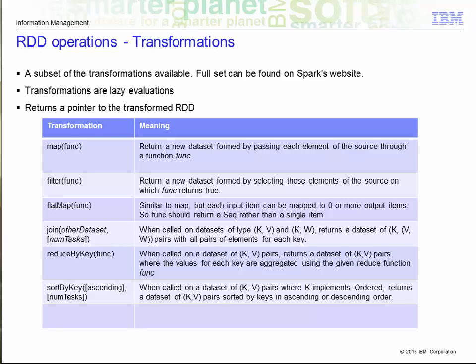I'm not going to read through this as you can do so yourself. I'll just point out some things I think are important. The flatMap function is similar to map, but each input can be mapped to zero or more output items. What this means is that the return pointer of the func method should return a sequence of objects rather than a single item.